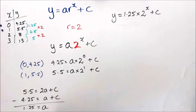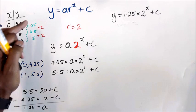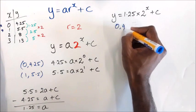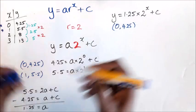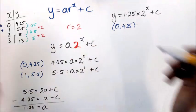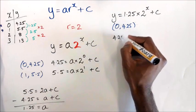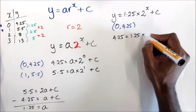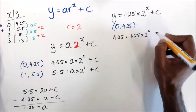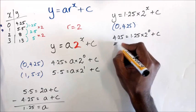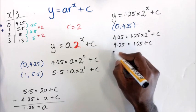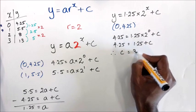I'm going to use the point (0, 4.25) as my coordinates, which means I have 4.25 equals 1.25 times 2 to the power of 0 plus c. This gives 4.25 equals 1.25 plus c, and rearranging, c equals 3.